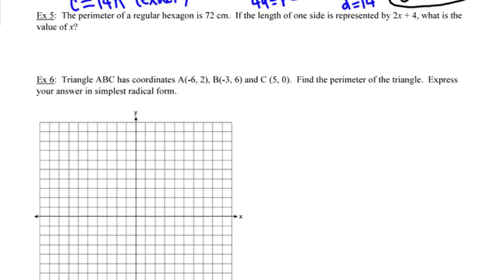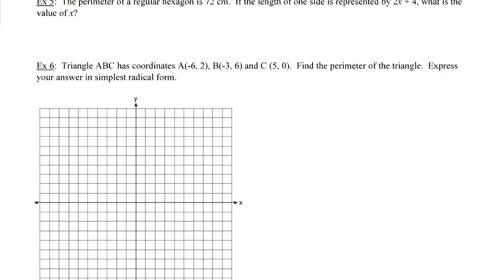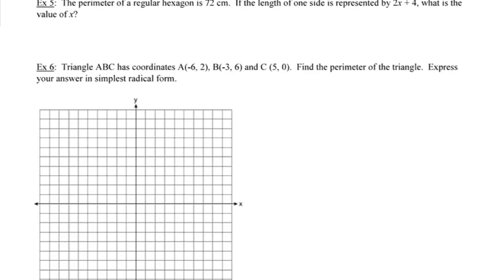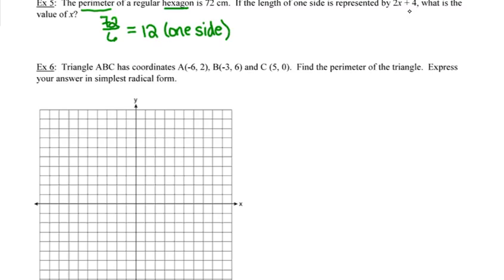Number 5 says the perimeter of a regular hexagon is 72 centimeters, and one side can be represented by 2x plus 4. We need to find x. Since a hexagon has 6 equal sides, dividing 72 by 6 gives a side length of 12. Setting 2x plus 4 equal to 12, we get 2x equals 8, so x equals 4.